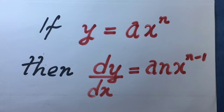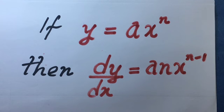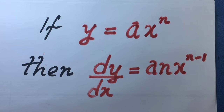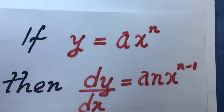Welcome back. So let's go straight into proving that if y equals ax raised to the power n, then dy/dx will be equal to anx raised to the power n minus 1. We are going to be using the first principle of differentiation and starting with step 1.